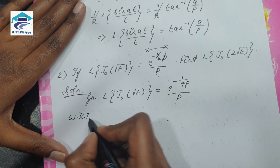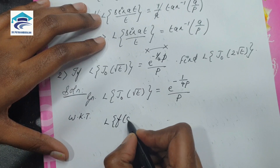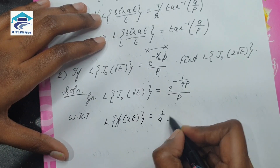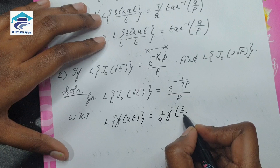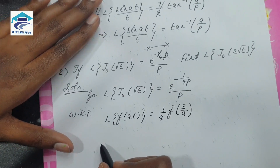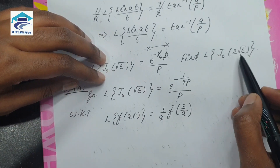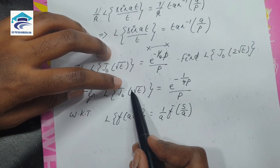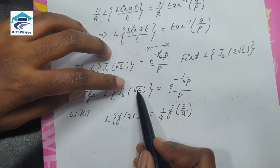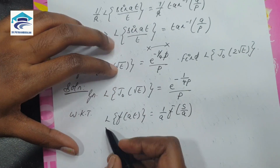We know that L of f(at) is equal to (1/a) F̄(s/a). We are going to use this. We need to find L of J₀(2√t). How can we get the 2? If a is 4, then √4 is 2, so we will be getting 2. We are going to use a equal to 4.